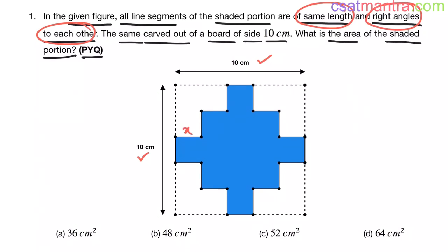How many line segments are there? 1, 2, 3, 4, 5 — they are 5 in number. So, 5 into x equals 10. This is the total length. So x equals 10 divided by 5, that is 2. Each line segment is of the same length.